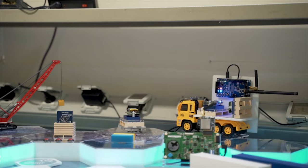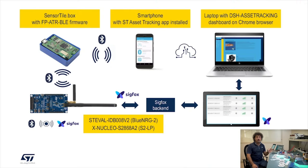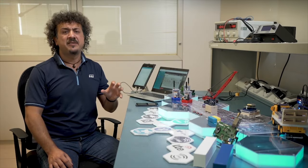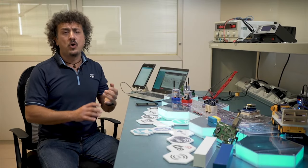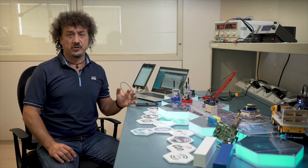The black box collects the data from all the pallets using, in this case, Bluetooth low-energy technology, and sends them to the cloud using a low-power wide-area network communication, such as LoRa, narrowband IoT, or Sigfox. In this specific solution, we are using Sigfox for long-range communication.